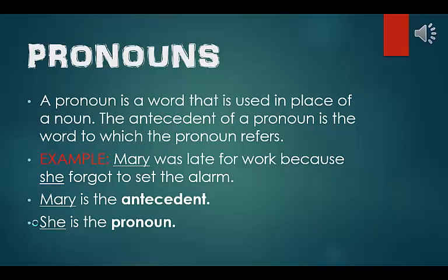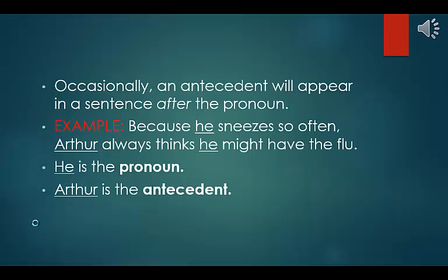We now move on to pronouns. A pronoun is a word that is used in place of a noun. The antecedent of a pronoun is the word to which the pronoun refers. Example: Mary was late for work because she forgot to set the alarm. Mary is the antecedent; she is the pronoun. Occasionally, an antecedent will appear in a sentence after the pronoun. Example: because he sneezes so often, Arthur always thinks he might have the flu. He is the pronoun; Arthur is the antecedent.